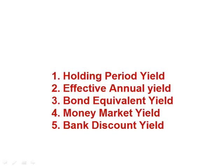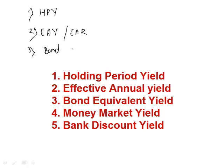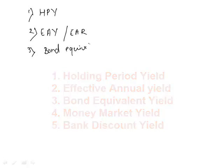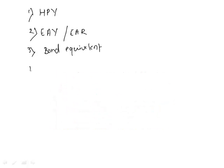What we want to learn to calculate here is five different types of yields. The first one is holding period yield. The second one is effective annual yield, also called effective annual rate. The third one is bond equivalent yield. The fourth one is money market yield. And there is a fifth one which is bank discount yield.